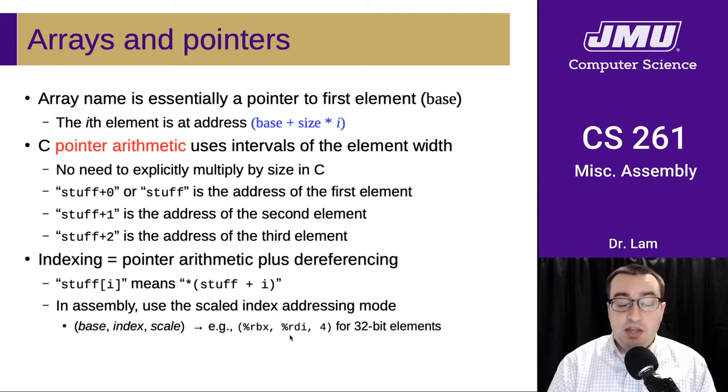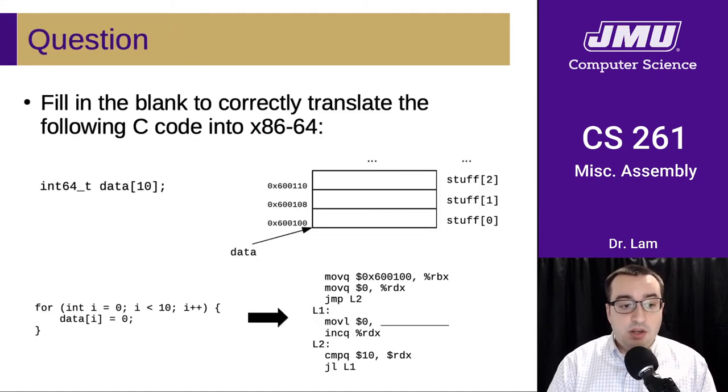So base register, index register, and then the scale factor. For 32-bit elements, for instance, our scale factor would be four for four bytes each. So here's a quick quiz.